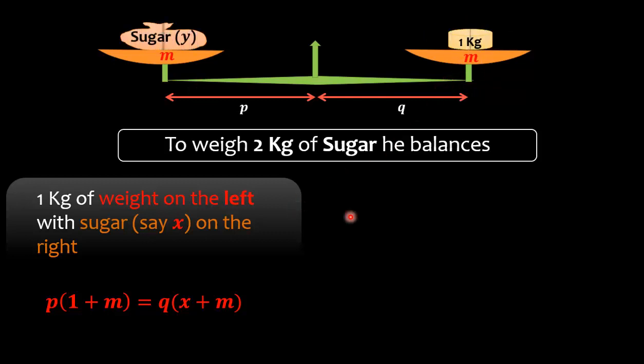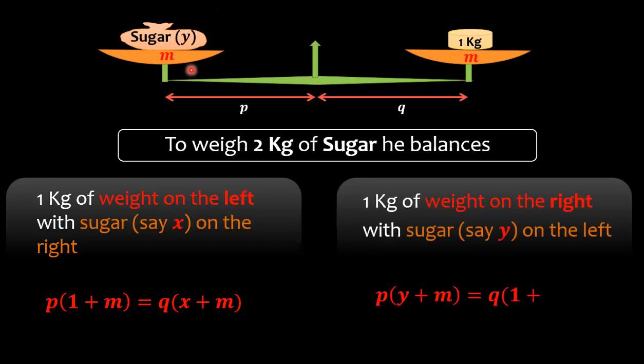Secondly, when he kept 1 kg of weight on the right side and sugar on the left side, the equation will be p(y + m) equal to q(1 + m), whereby y is the weight of the sugar he has measured. That means p into y plus m equals q into 1 plus m.